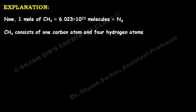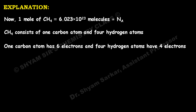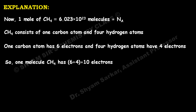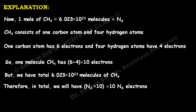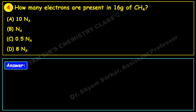Methane consists of one carbon atom and four hydrogen atoms. One carbon atom has 6 electrons and four hydrogen atoms have 1 × 4 = 4 electrons, so total electrons per molecule of methane = 10. We have Avogadro's number (Nₐ) of molecules, so total electrons = 10Nₐ. This matches option A — option A is the correct answer.